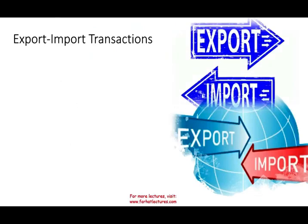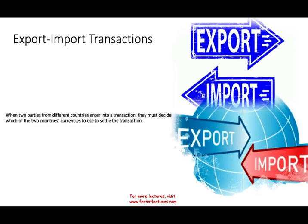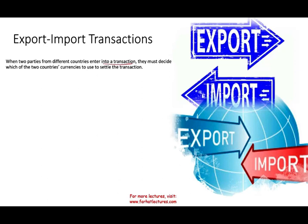Today we're going to be discussing export-import transactions. Simply put, when we have two entities from two different countries buying and selling from each other, or when you buy supplies from a different country, you're going to be exposed to foreign currency risk. When two parties from different countries enter into a transaction, they must decide which of the two countries' currencies to use to settle the transaction. For example, a US company buying from a German company might have to pay in euros, creating an exposure.